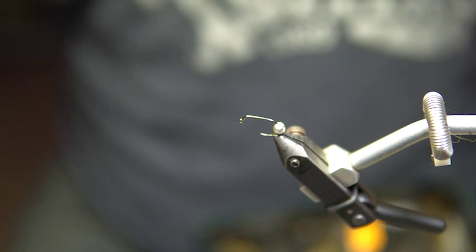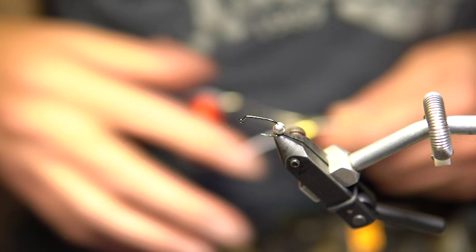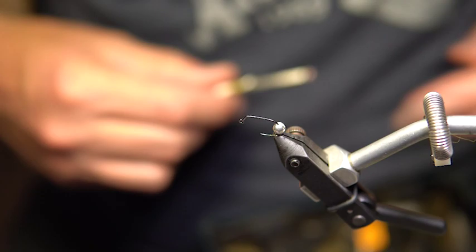This one I'll tie with red thread. You can use whatever thread you want. Most of the thread won't show through, but if you want a little hot spot of red or orange, yellow, tons of different colors, whatever you want. I tie a variety of them—quite a few different colors with different worms, different colored beads, different colored threads. Pretty basic, pretty simple.